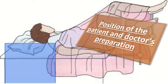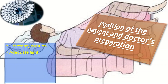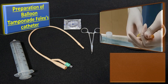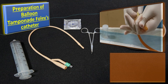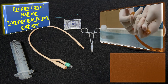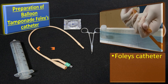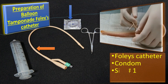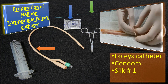Regarding patient positioning and doctor's preparation: I will put the patient in lithotomy position with adequate light and anesthesia. After gowning and gloving, I will drape the patient and empty the bladder. Under aseptic measures, I will take a 16-gauge adult-size Foley's catheter, fit it with a condom, and tie it with silk number one at its lower end.